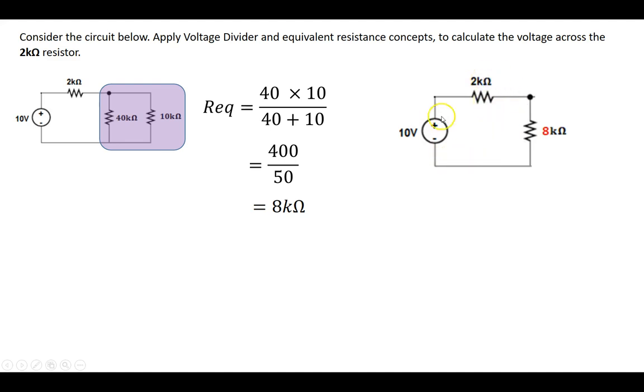So according to the voltage divider formula, if I want to find out the voltage across this 2 kOhm resistor when everything is in series, then it's simply the ratio of 2 kOhm and the sum of the overall resistor here, so 2 and 8.